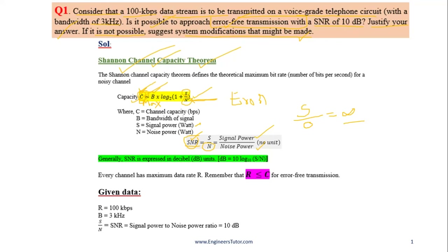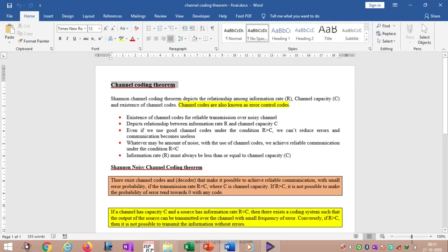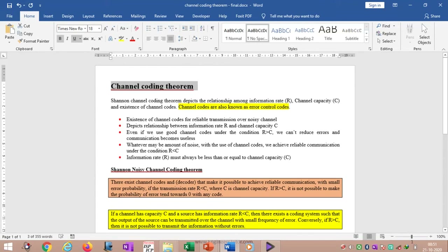Generally SNR is expressed in dB, and there is a standard conversion formula. Every channel has a maximum data rate. Remember that R must be less than or equal to C — the data rate we transmit over the channel must be less than or equal to channel capacity for error-free transmission. This is the channel coding theorem.